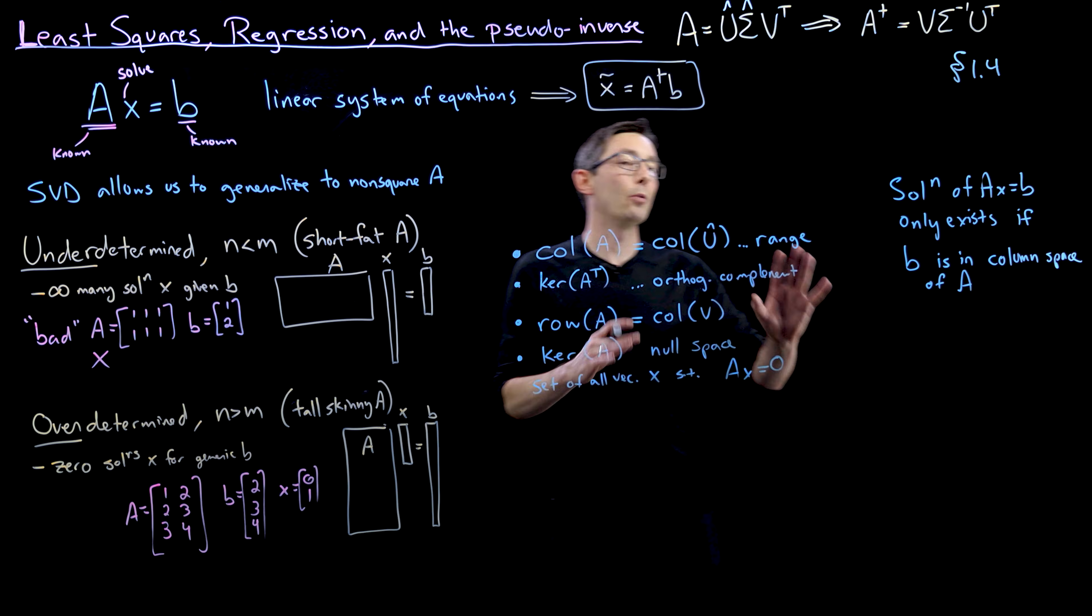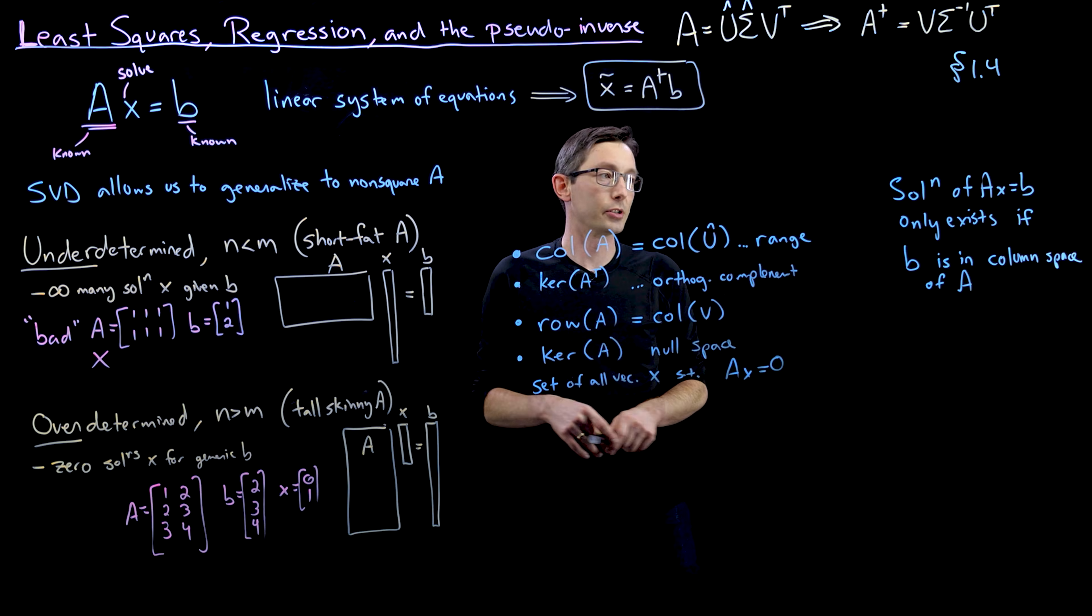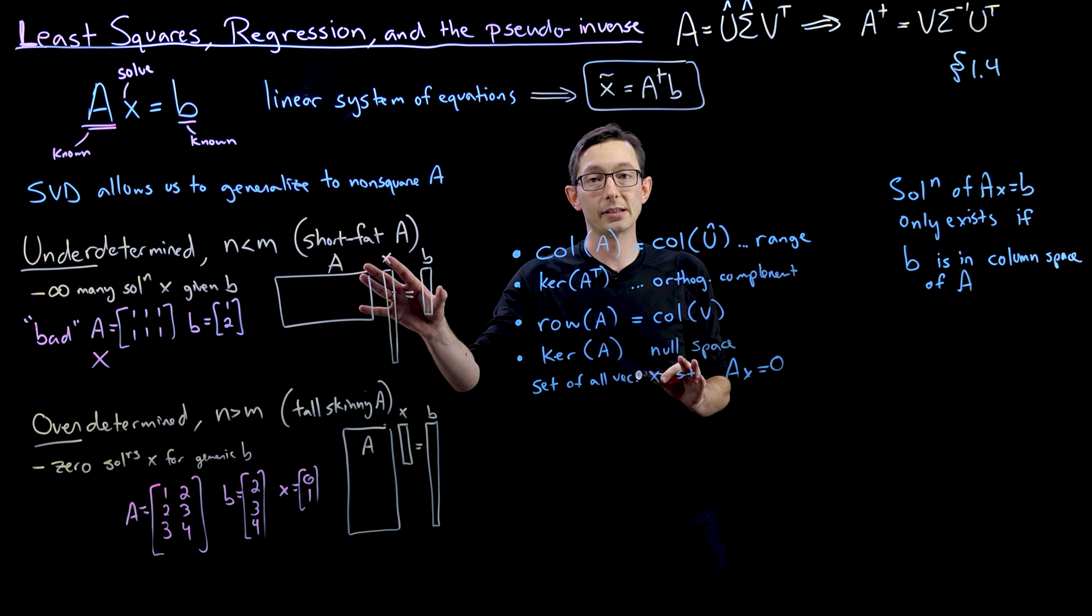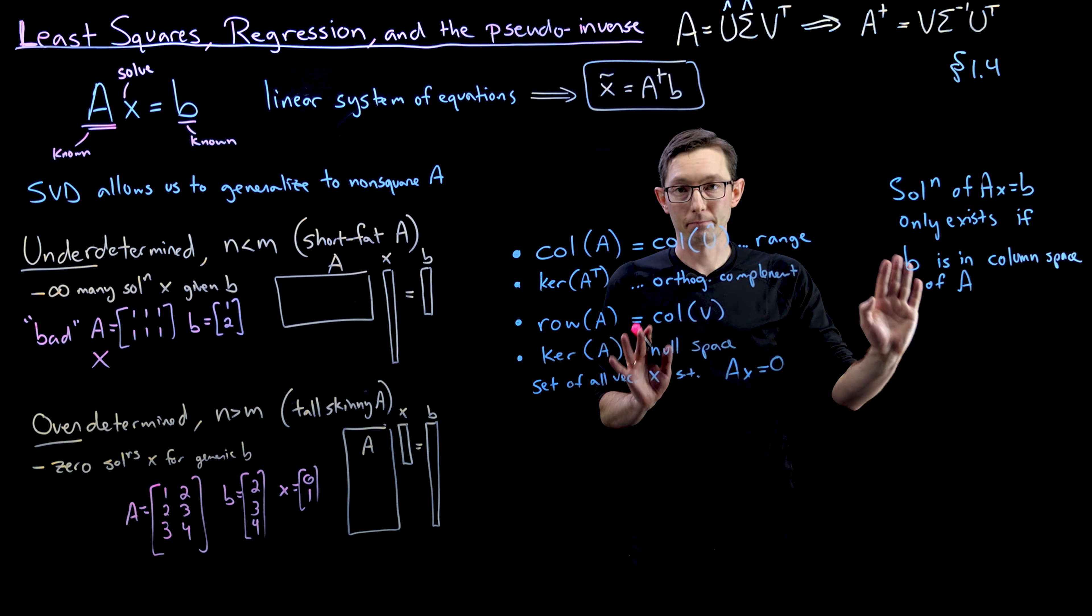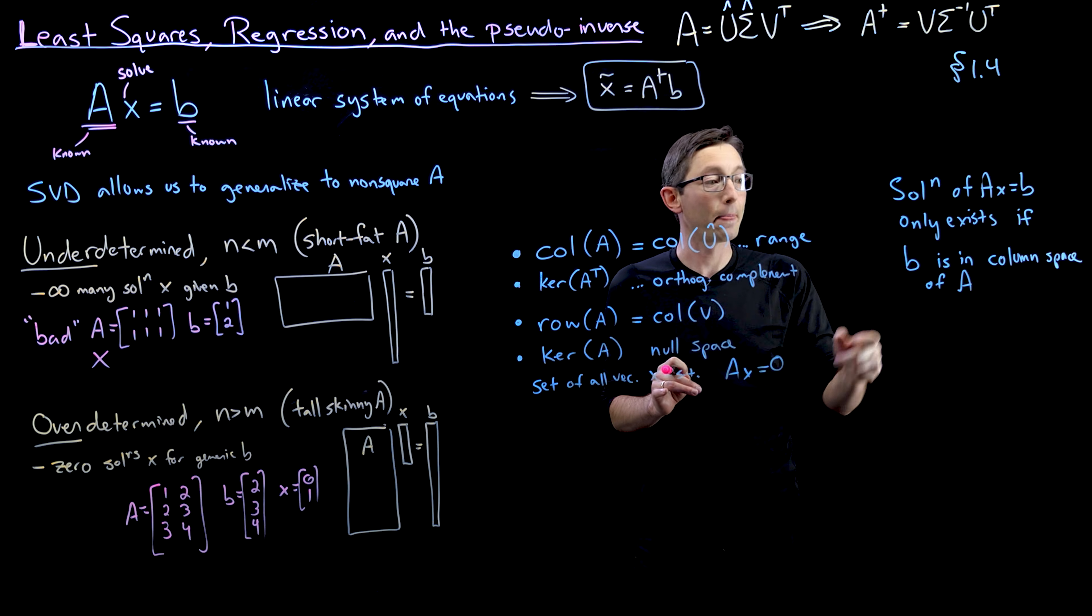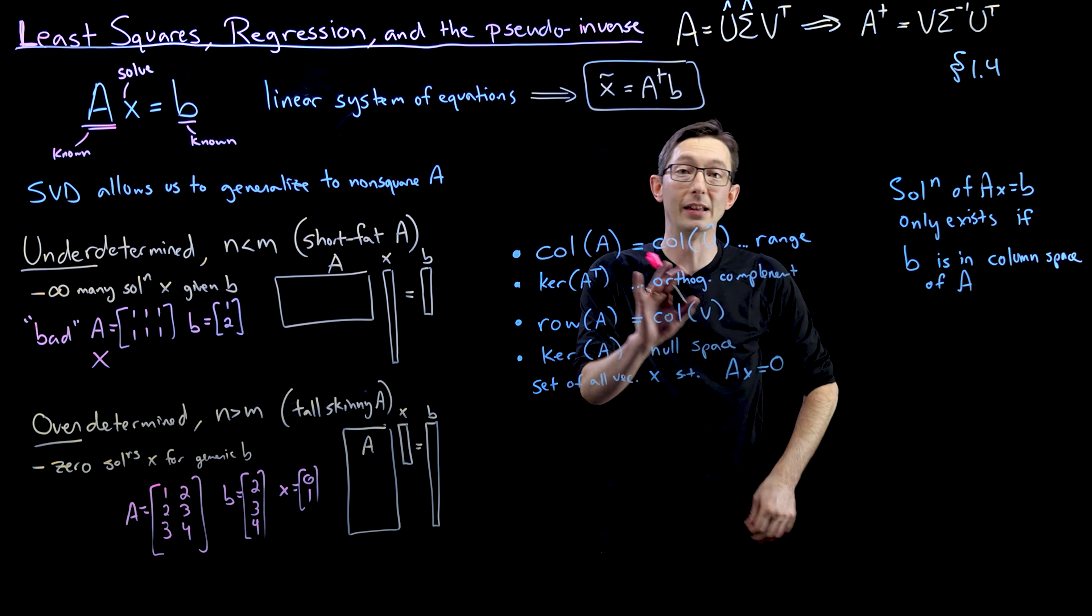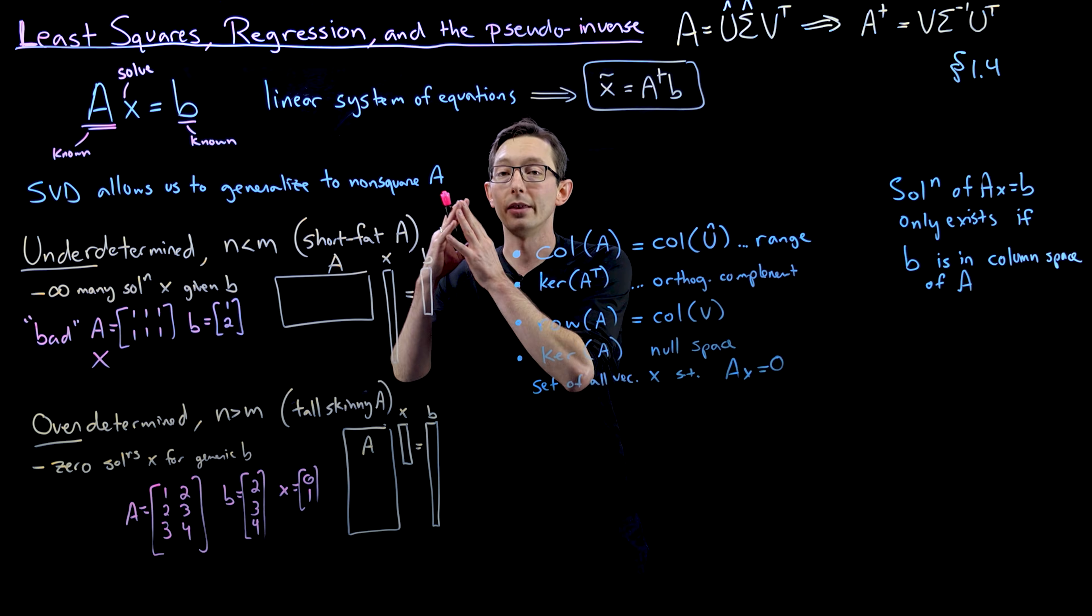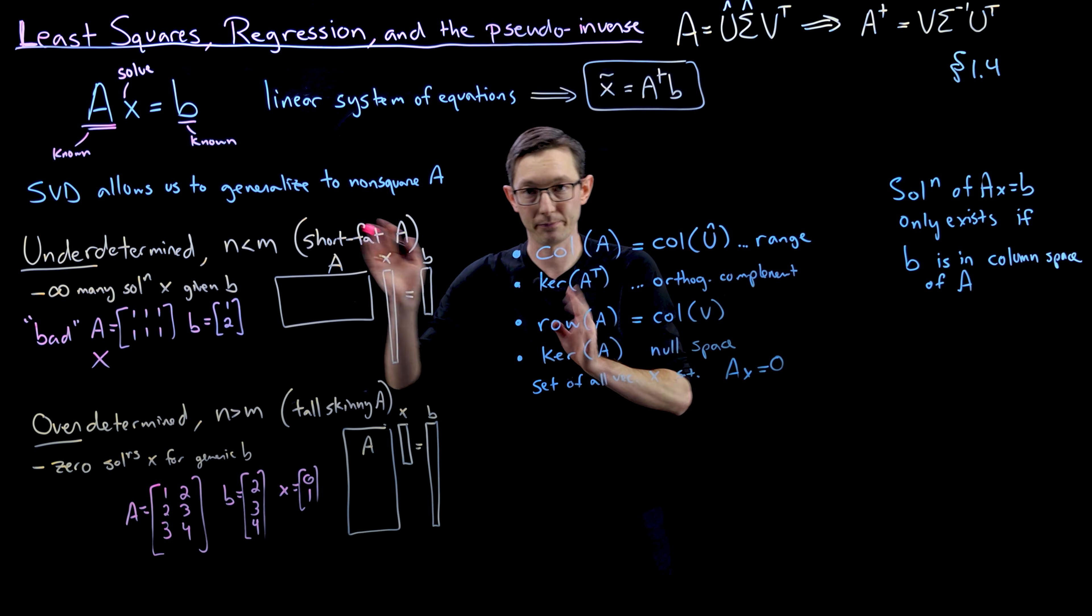Good. Now we're ready to talk about when there are no solutions, one solution, and infinitely many solutions. So the only way I'm going to have a solution of AX equals to B, an exact solution, is if B is in the column space of A. So that guarantees that I will have a solution if B is in the column space of A. And if B is not in the column space of A, if it somehow has some component that's outside of that column space, then I will, no matter how hard I try to find an X, there will not be an X that exactly satisfies AX equal to B, as in this case.